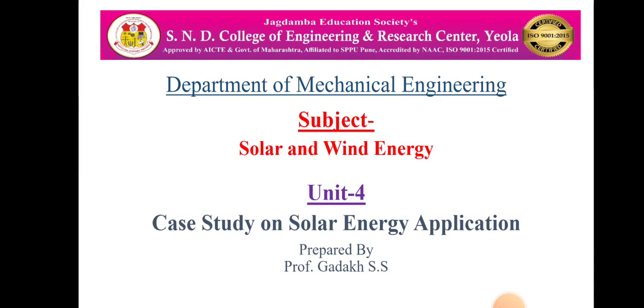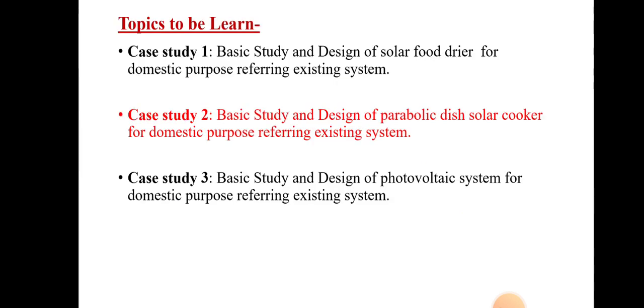From that subject, from unit number 4, that is case study on solar energy application, we have covered the first case study, that is the case study related to the solar food dryer. Then, from the last lecture, we have started the second case study, that is the parabolic dish solar cooker.